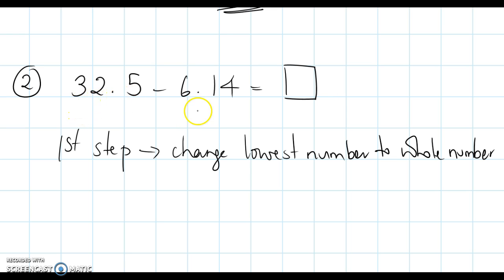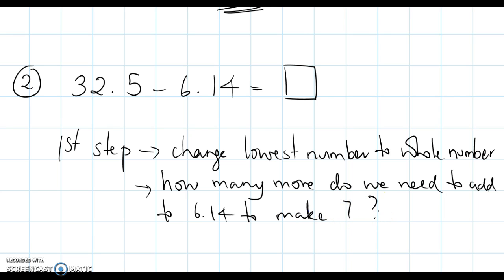So out of 32.5 and 6.14, the lowest number is 6.14. So we need to change 6.14 to its nearest whole number, which is 7. How many more do we need to add to 6.14 to make 7? 6.14 to make 7.